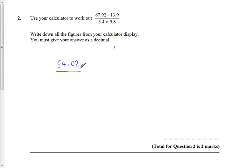I could use brackets on my calculator or I could just clear it off and then do the bottom: 3.4 times 9.8, and I get 33.32. So I worked out each bit separately.